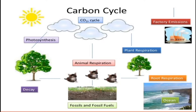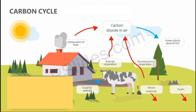Animal respiration and burning of fossil fuels both release carbon. Plant respiration is opposite to photosynthesis: in photosynthesis carbon dioxide is taken in and oxygen is released, while in respiration oxygen is taken in and carbon dioxide is released. Factory emissions — while burning coal — also release carbon in the form of carbon dioxide.